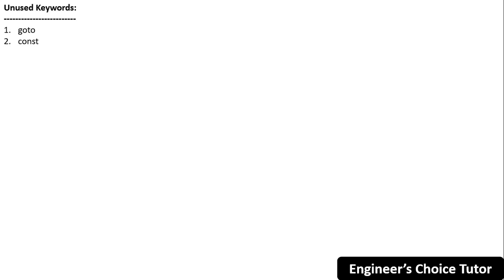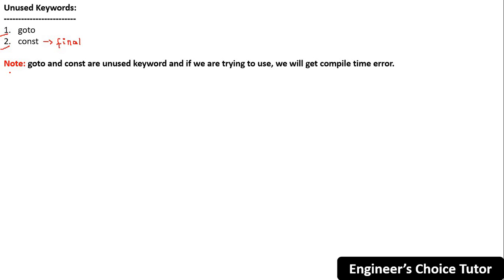The two unused keywords are goto and const. Goto is banned because it leads to confusion for programmers and creates several problems, as seen in older languages like C. Const is unused because in Java we use the final keyword in its place. If you mistakenly use either of these keywords in your program, you will get a compile-time error.